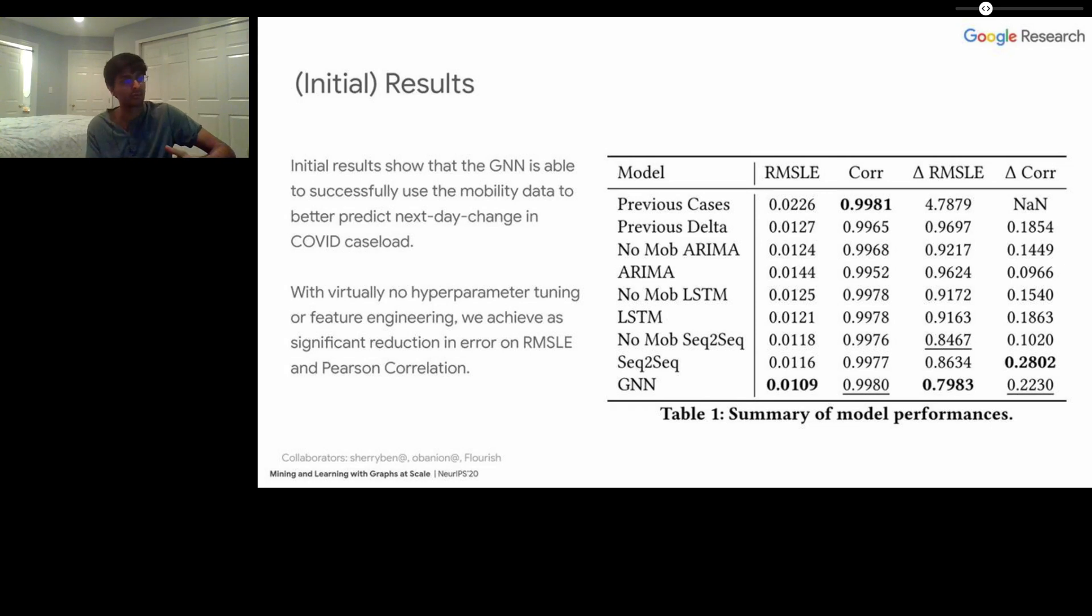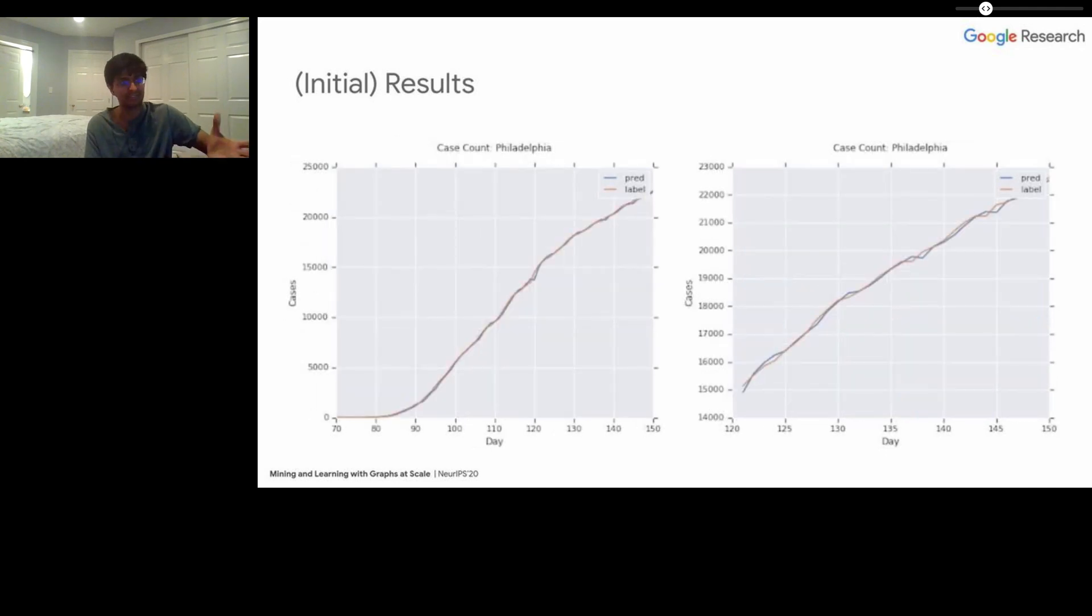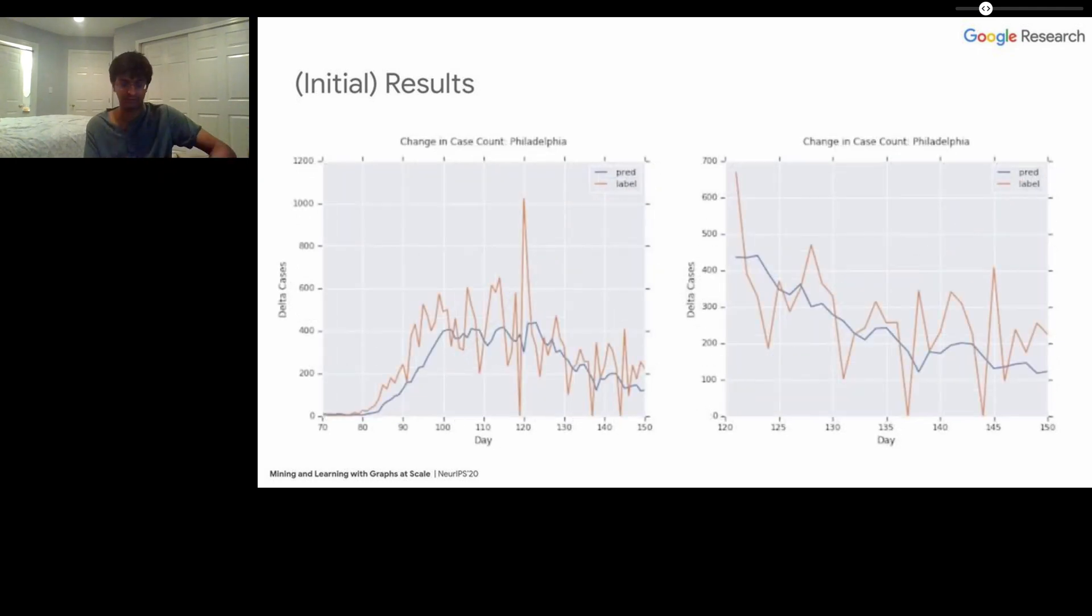This is a visual representation of the model's predictions and the actual ground truth for a given location, in this case Philadelphia. You can see that the blue prediction line actually trends pretty close to the underlying ground truth, which is again pretty exciting. This is the same data represented as a cumulative count instead of as a delta. This is predicting the change in case counts in Philadelphia, and this is predicting the cumulative case count in Philadelphia.